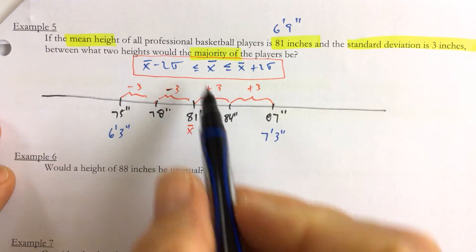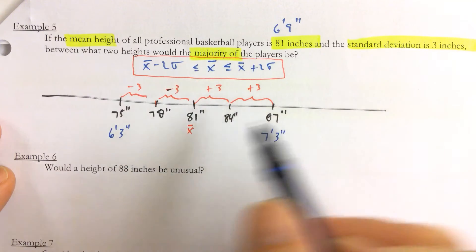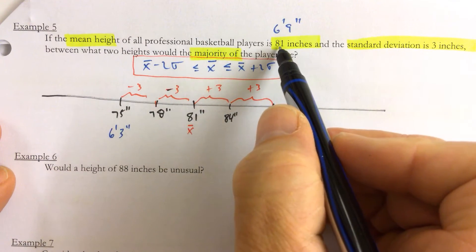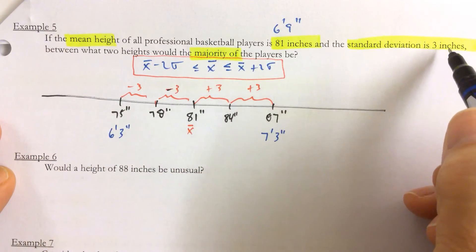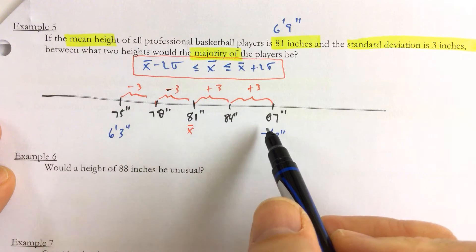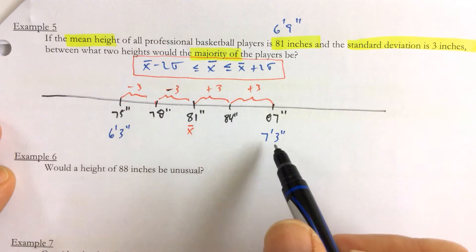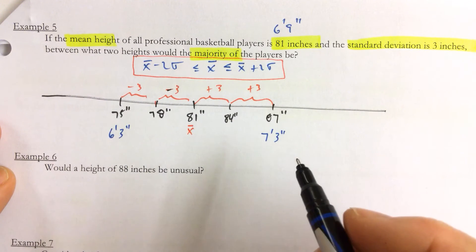So most NBA players, according to this statement, if these numbers are true—81 inches is the mean and standard deviation is three—then most NBA players would fall between six three and seven three. There are outliers.